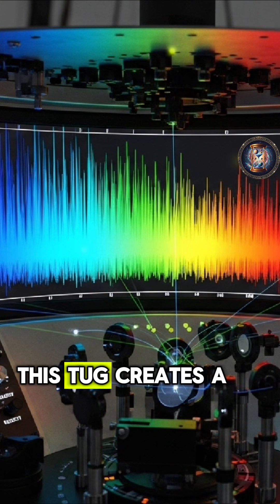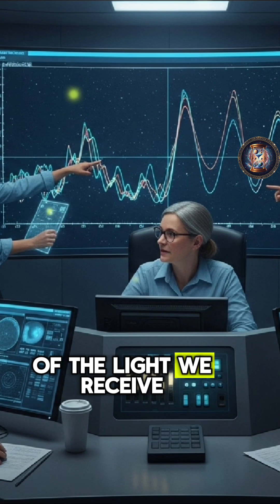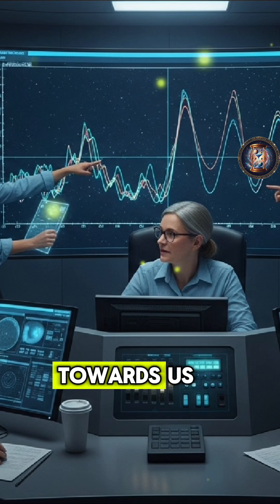This tug creates a slight wobble in the star's motion, which changes the color of the light we receive, the Doppler shift phenomenon. When the star moves towards us, its light shifts towards blue.